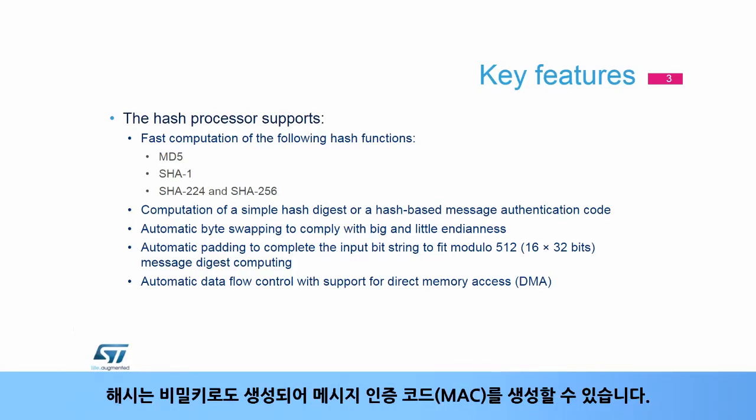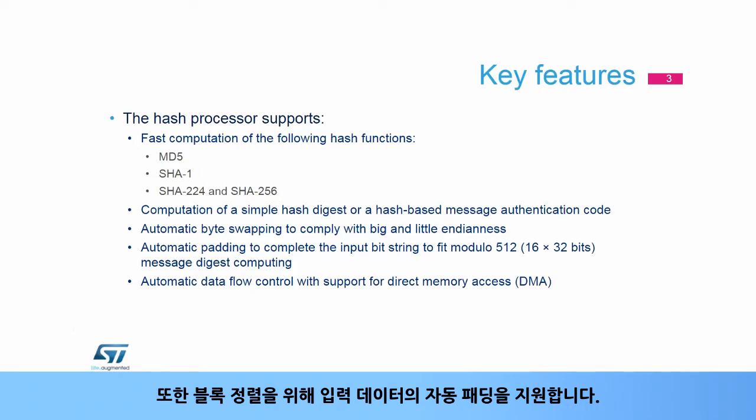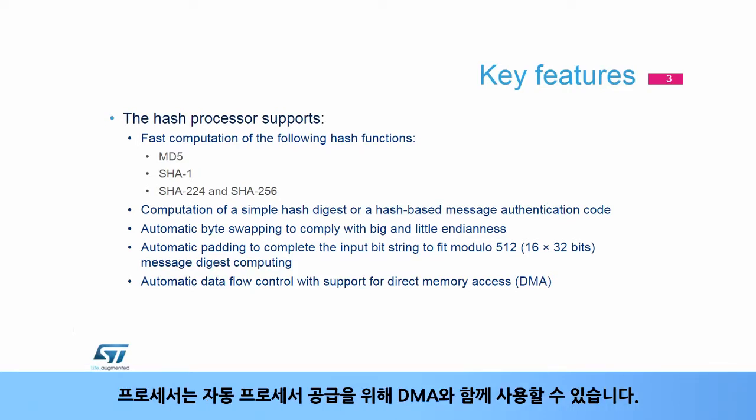A hash can also be generated with a secret key to produce a message authentication code or MAC. The processor supports bit, byte and half word swapping. It also supports automatic padding of input data for block alignment. The processor can be used in conjunction with the DMA for automatic processor feeding.